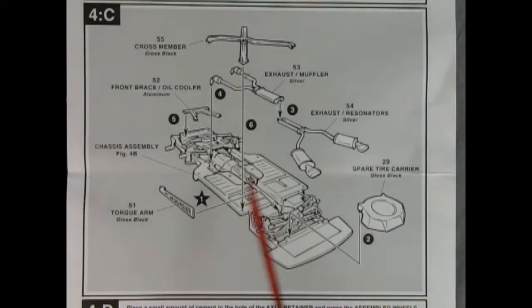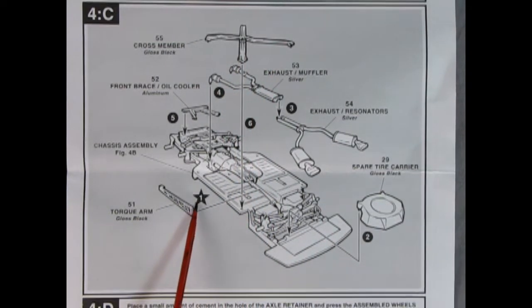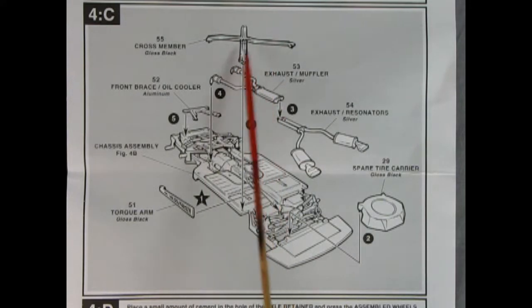Panel 4C basically finishes our chassis assembly. We've got our spare tire carrier. It goes on the back. And then our exhaust pipes and mufflers. We also have our front brace oil cooler and the torque arm. And then the cross member goes on the top. Remember the star is the first thing you put on. And then it goes 2, 3, 4, 5, 6. And hey, there's no number for this cross brace. I want my money back.